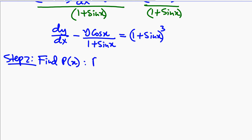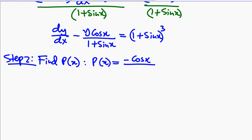Step 2 will be to find p of x. So p of x will be negative cos x over 1 plus sin x.